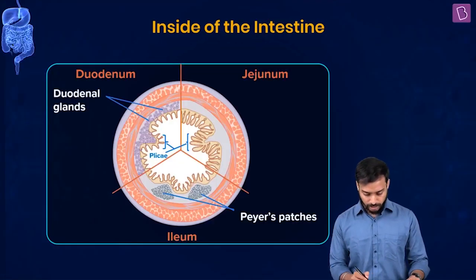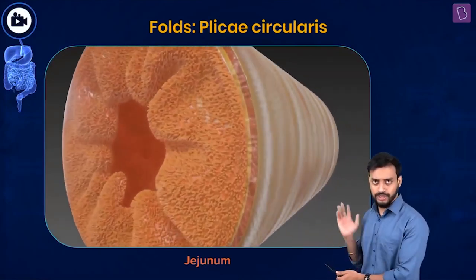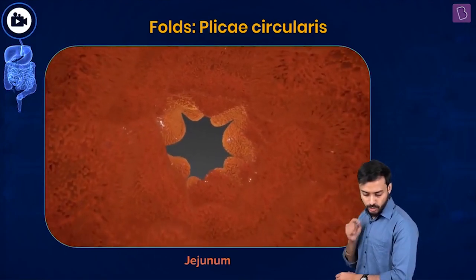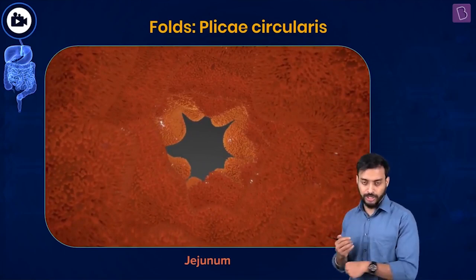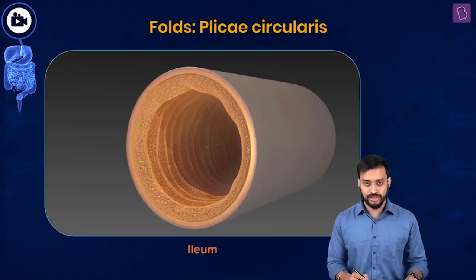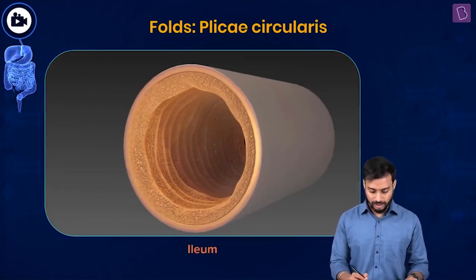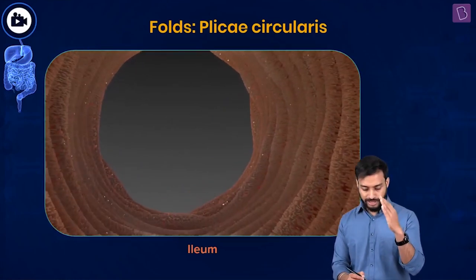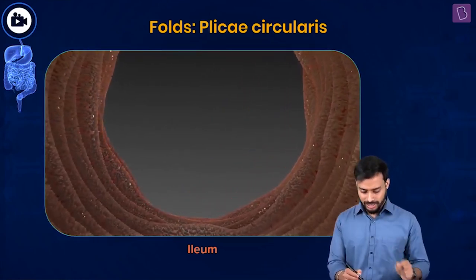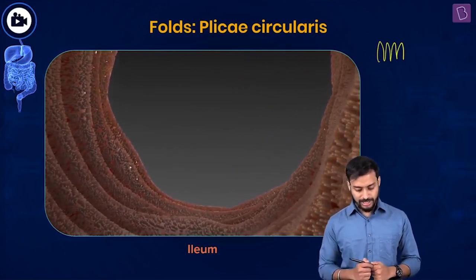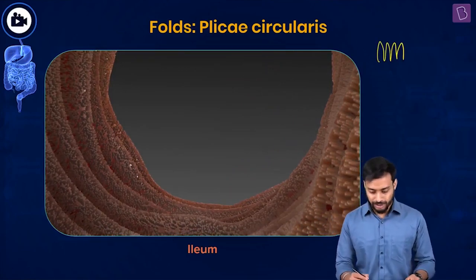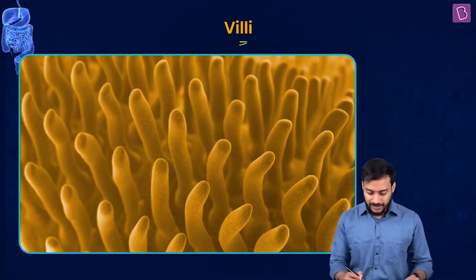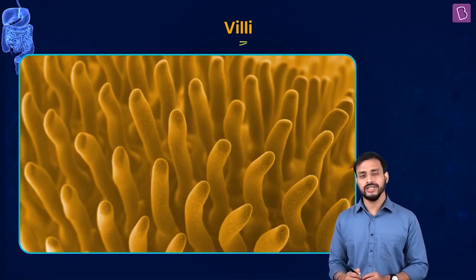Let's look at the projections once more - a lot of effort went into preparing this. Taking a closer look, these tiny projections appear finger-like. These are known as villi - the intestinal villi.